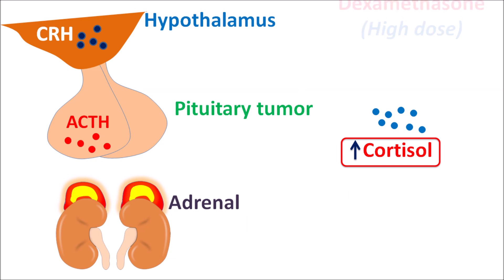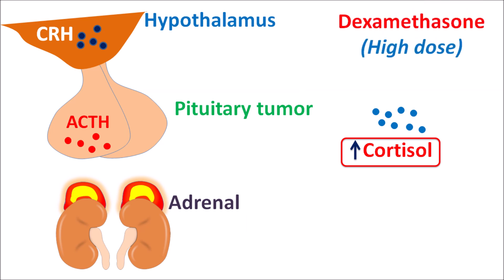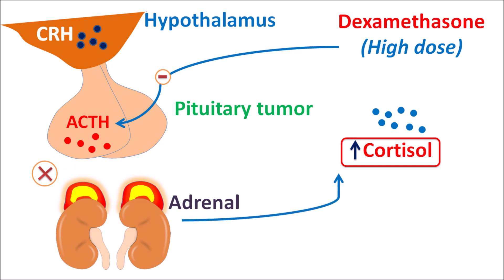When dexamethasone is given at a high dose, it can control ACTH secretion by negative feedback mechanism. Because of the high dose of external steroid, ACTH secretion is inhibited. When ACTH secretion is inhibited, the secretion of cortisol from the adrenal cortex is also inhibited, resulting in decreased cortisol levels. So by administration of high dose dexamethasone, cortisol levels are suppressed in patients with pituitary tumor.